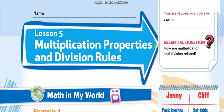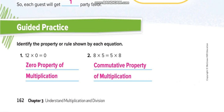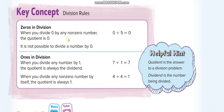Hi everyone, welcome back to my channel, Learn Math with Mr. Saad. Today's lesson is for Grade 4, Chapter 3, Lesson 5: Multiplication Properties and Division Rules, page number 161. In this lesson we have three multiplication properties and two division rules on the next page.